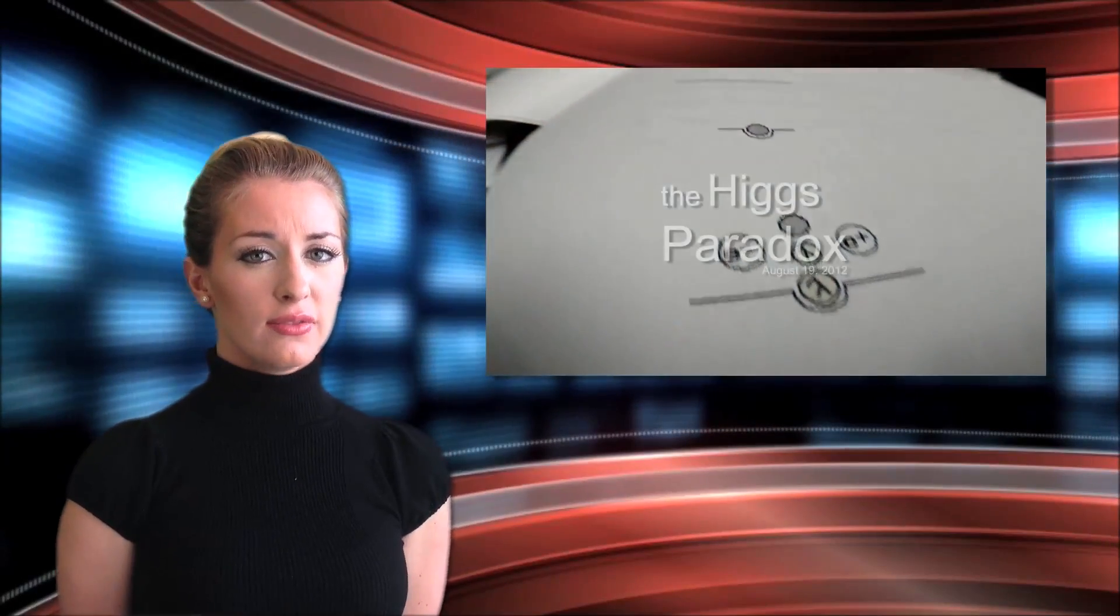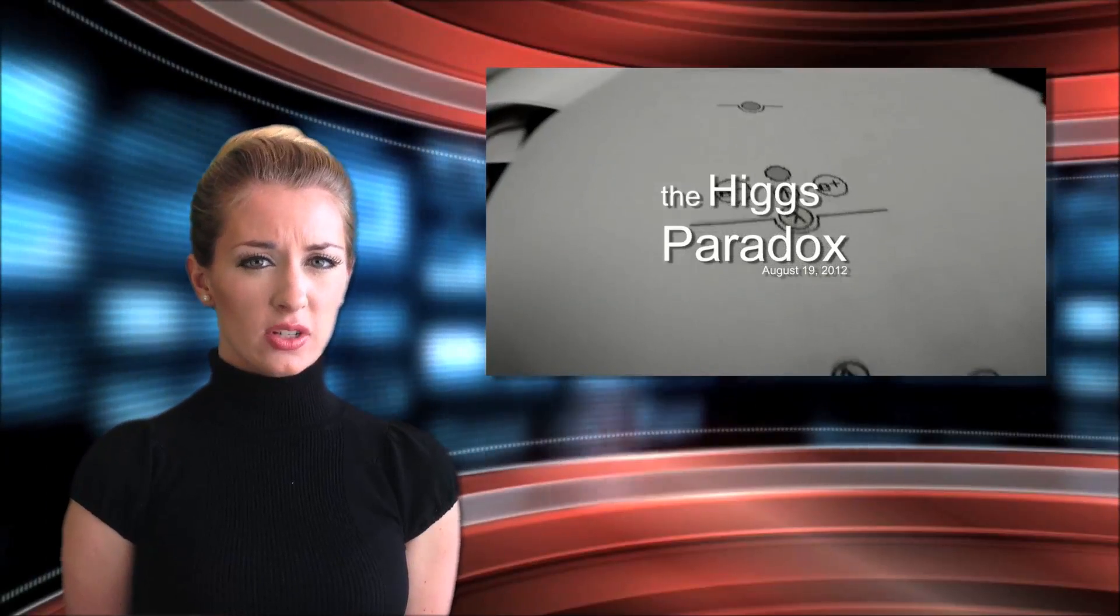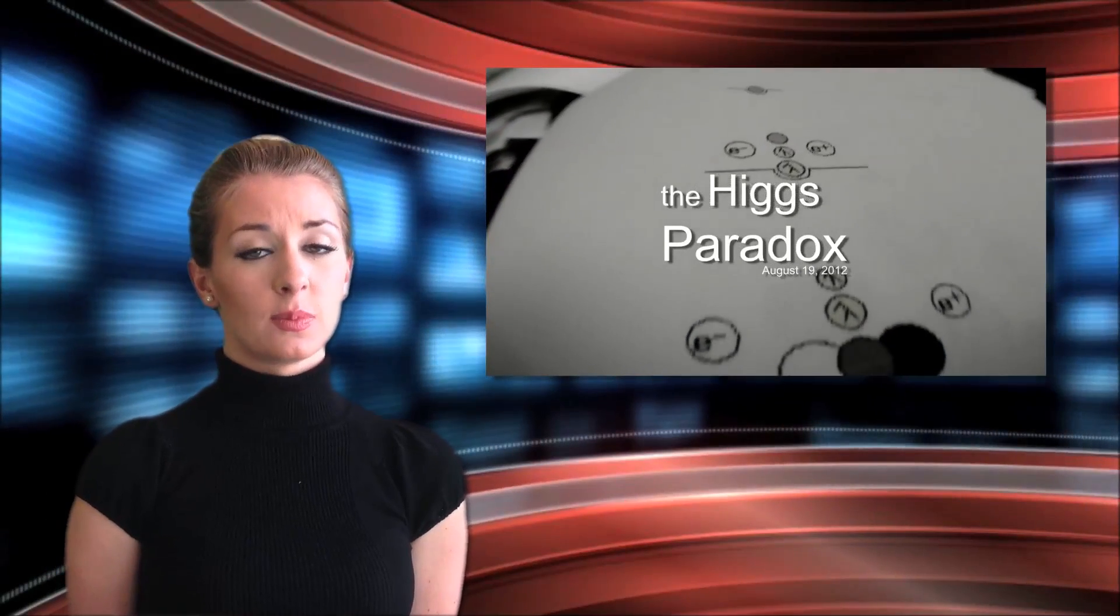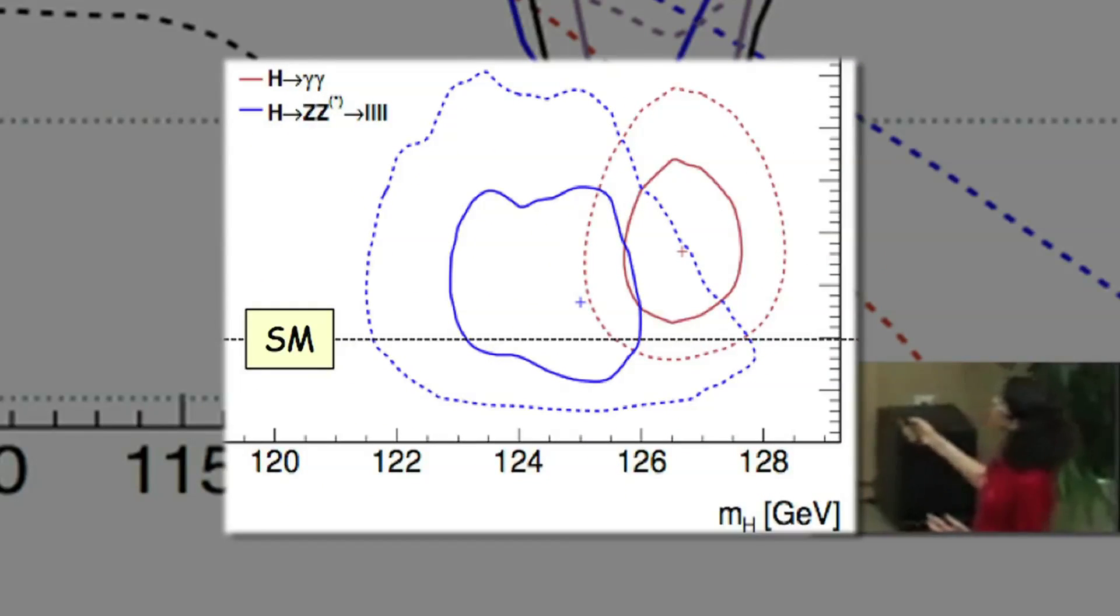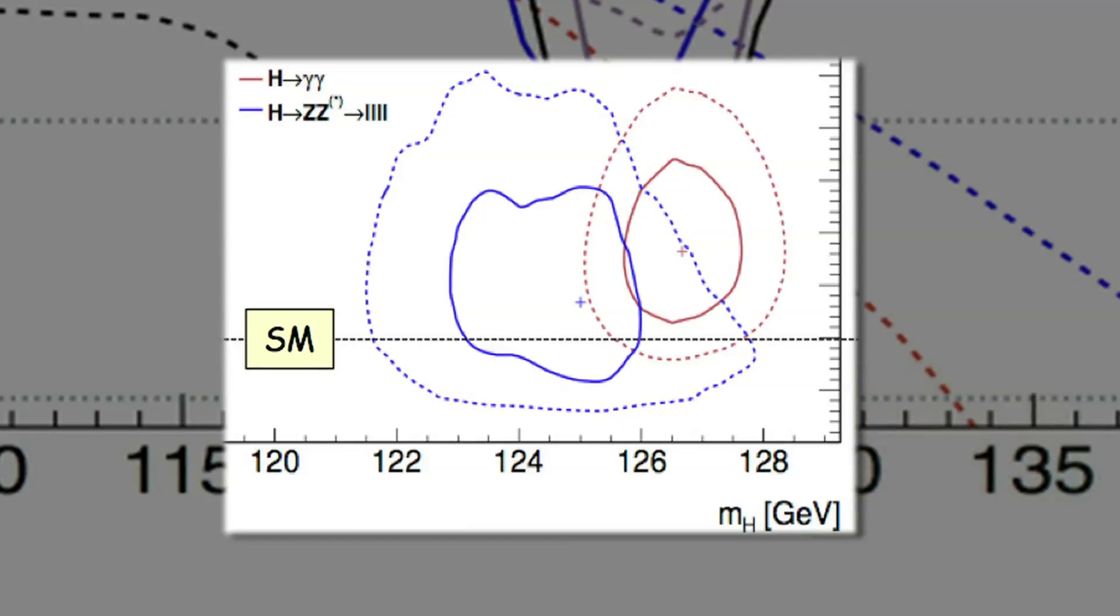Shortly after the big announcement, Wintz posted another video titled The Higgs Paradox, where he explains this bizarre glitch. And these are the results. You can see here the curves, and I don't have to spend much time to convince you that there is compatibility at this level of fluctuation and statistics.